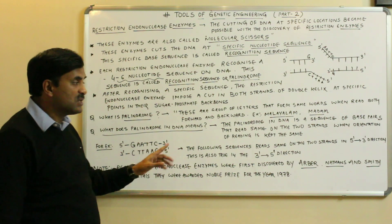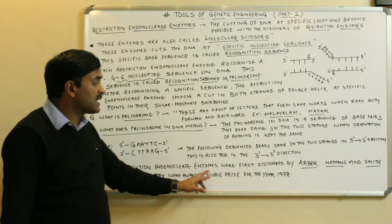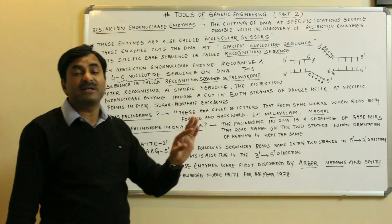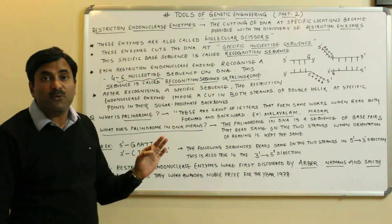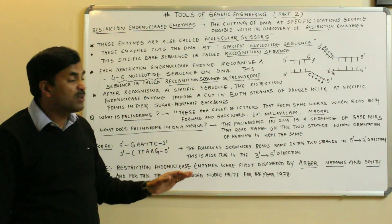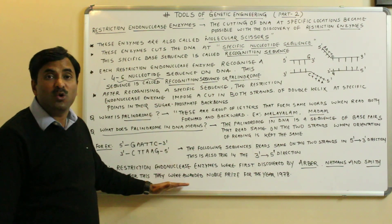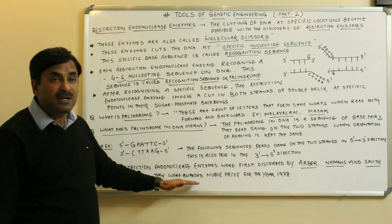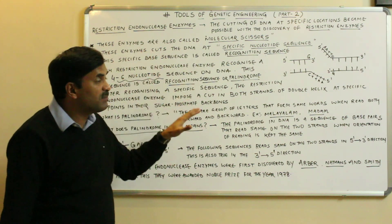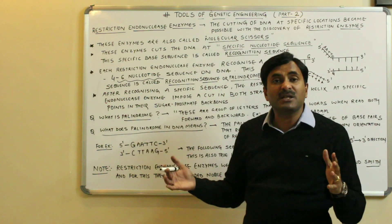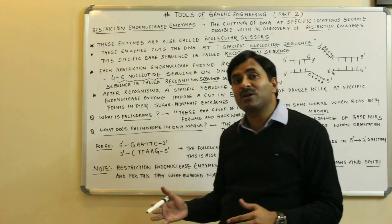Restriction endonuclease enzymes were first discovered by a group of three scientists: Arber, Nathans, and Smith. The credit for the discovery of the restriction endonuclease enzyme goes to these three scientists, and for this they were awarded the Nobel Prize in 1978. Today we have discussed a small part of the restriction endonuclease enzyme; in the next video we will discuss more about it.